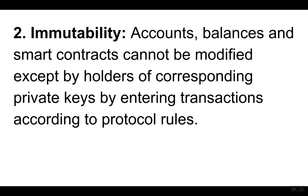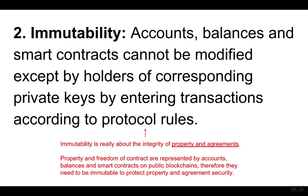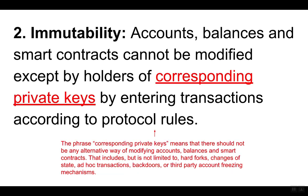Two, immutability. Accounts, balances and smart contracts cannot be modified except by holders of corresponding private keys by entering transactions according to protocol rules. Immutability is really about the integrity of property and agreements. Property and freedom of contract are represented by accounts, balances and smart contracts, and therefore they need to be immutable to protect property and agreement security.